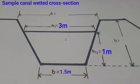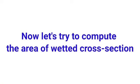Now we have a sample canal wetted cross-section where base B equals 1.5 meters, top line A sub 1 equals 3 meters, and the height of the wetted cross-section is 1 meter. Now let's try to compute the area of wetted cross-section.